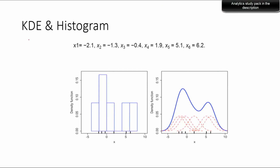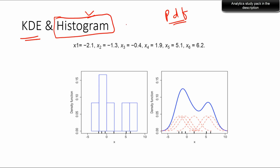KDE or kernel density estimation, through which you get a PDF, is somewhat similar to a histogram. If you do not have a theoretical probability distribution, the easy way to visualize your data is a histogram, because histogram itself is non-parametric in nature. Kernel density estimation is somewhat better than histogram — more interpretable and more rigorous in showing the distribution of the data.